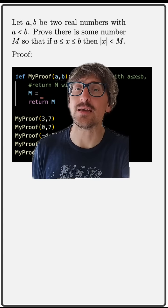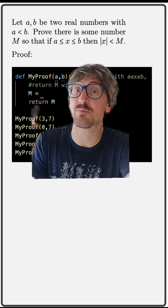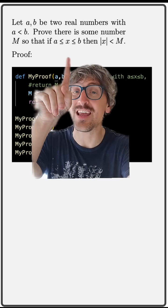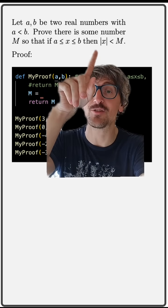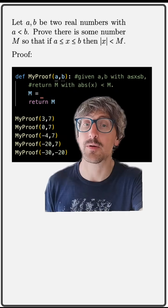We're given two numbers a and b and we're asked to find some number M so that if you take any number x between a and b, it's guaranteed that the absolute value of that number x has to be strictly less than your number M.